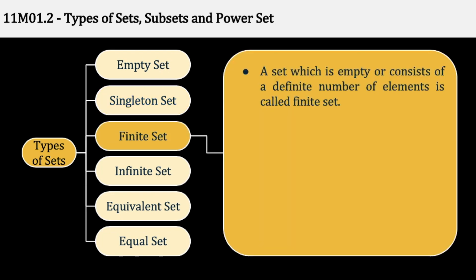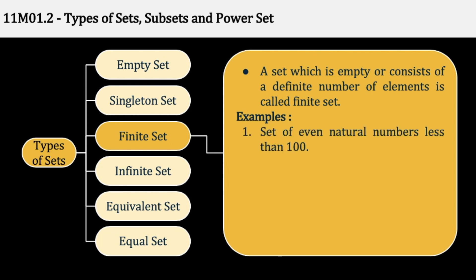Finite set is a set which is empty or consists of a definite number of elements. कोई भी definite number — इसमें आप exact number बता पाएं कि कितने elements हैं — वो finite set है। For example, set of even natural numbers less than 100. Natural numbers less than 100 में even आधे होंगे, उन सबको आप count कर सकते हैं, तो वो एक finite set हो गया। Similarly, all persons on earth — infinite लोग नहीं हैं दुनिया में, तक्रीबन 7 billion के आसपास लोग हैं, तो हम count कर सकते हैं, कोई definite number है।